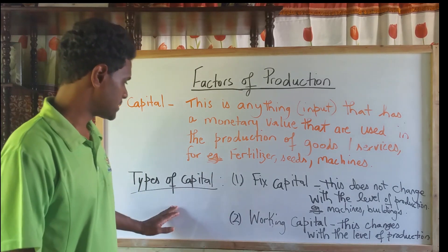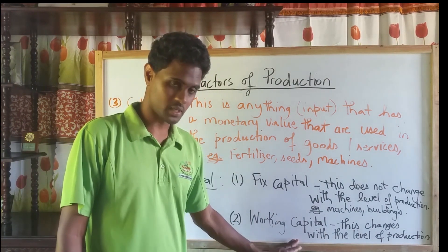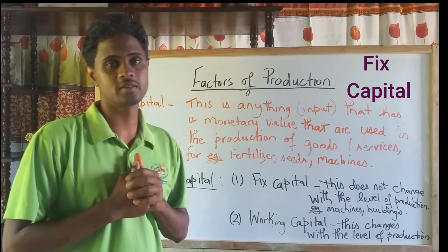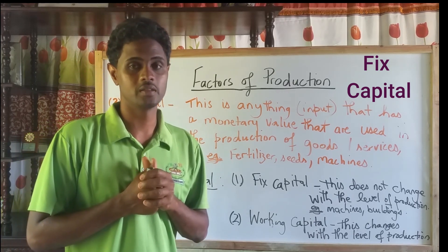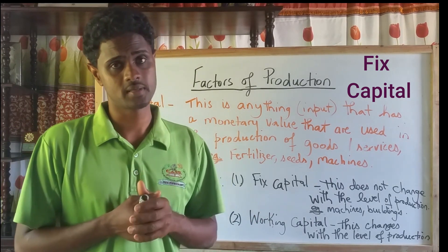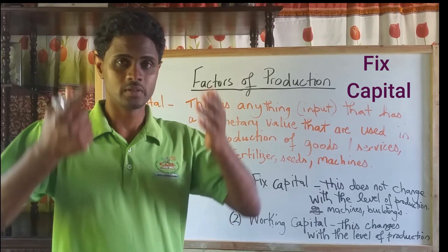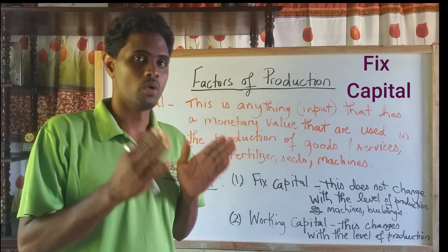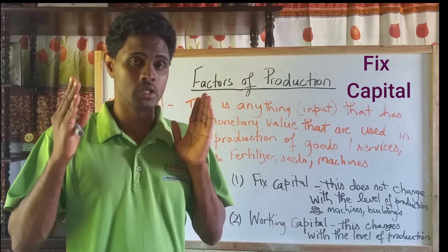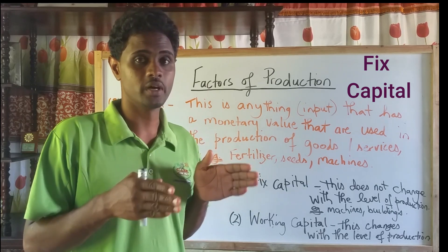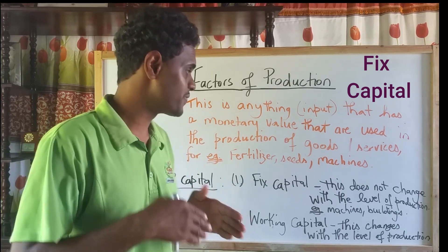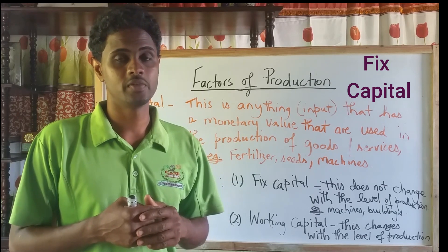There are two types of capital. One, fixed capital, and two, working capital. Fixed capital is those types of inputs that do not change or are not used up in the production process. For example, a building or a poultry house used to house chickens — the building is not used up in the conversion of the chicken. Once those chickens are grown and slaughtered, new chickens have to be purchased, but you do not have to purchase the building again. It remains fixed and is not converted in the production.